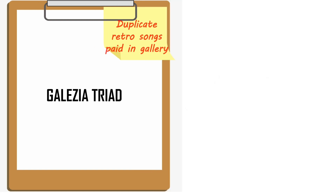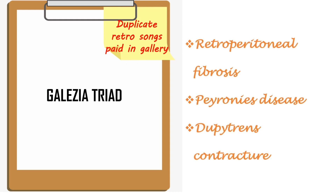Next one: Galeazzi triad. The clue is 'duplicate retro songs paid in Galdri.' Duplicate is Dupuytren's contracture, retro is retroperitoneal fibrosis, paid is for Peyronie's disease, and Galdri is to mention Galeazzi triad.